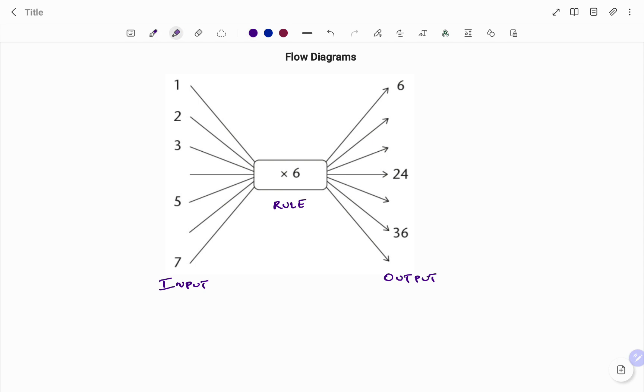In this example, let's start with the first input which is one. One is going in and the rule says to multiply by six, so we have one times six, giving you the output of six. In the second example we have two going in.